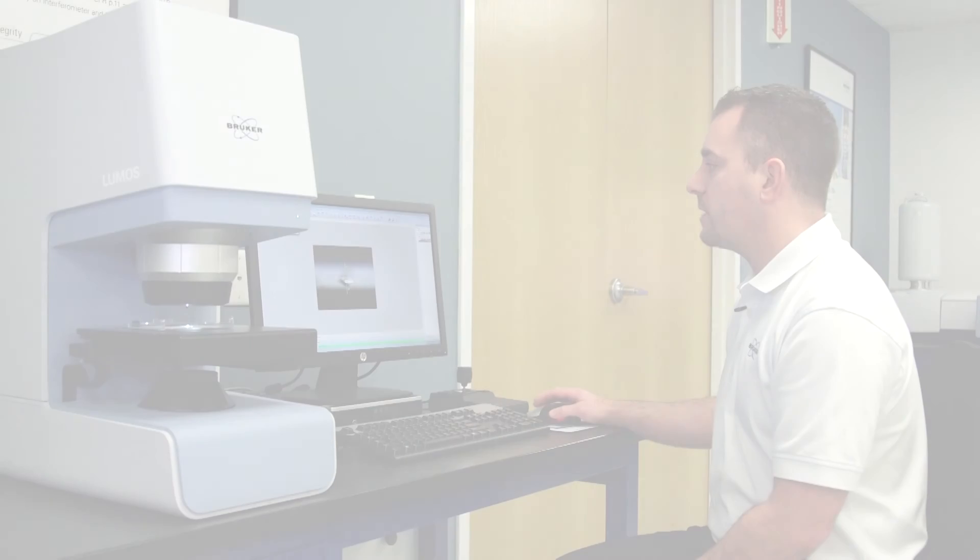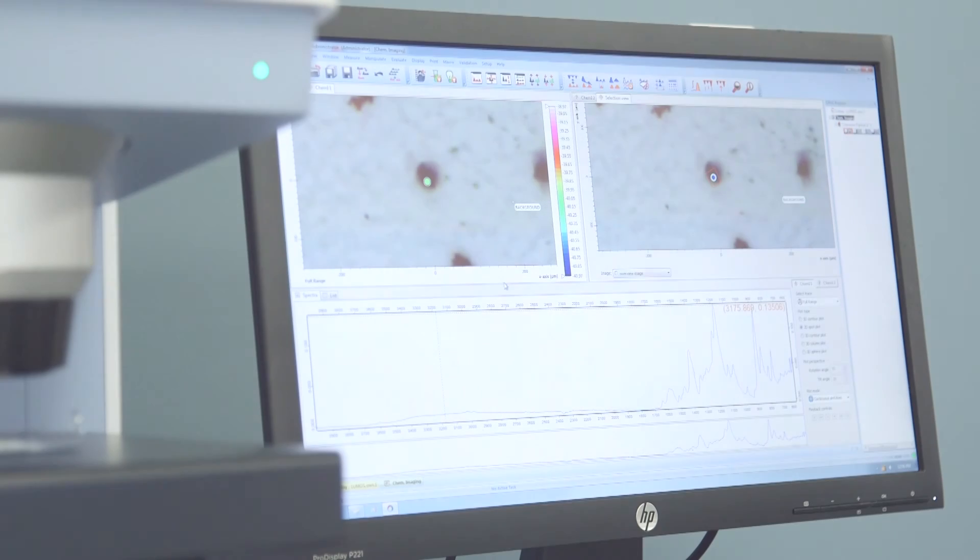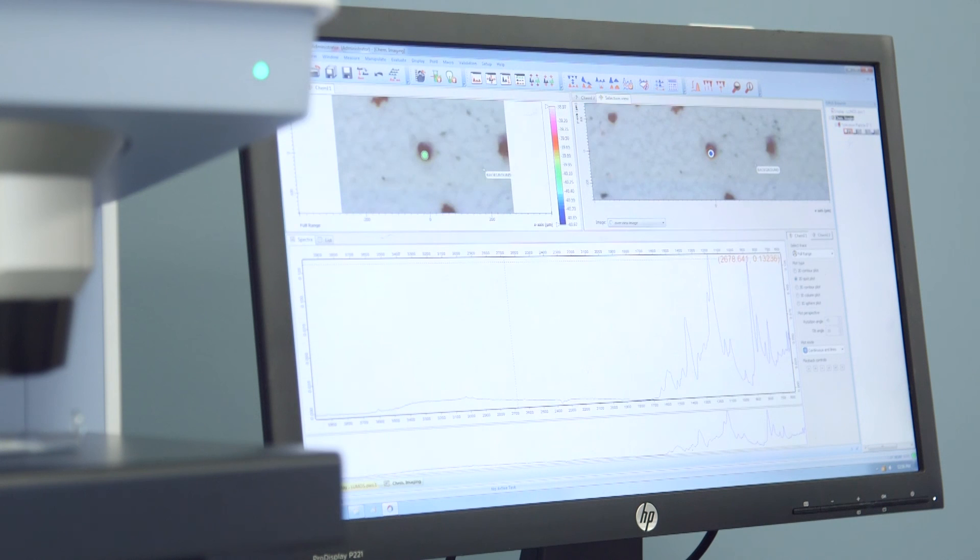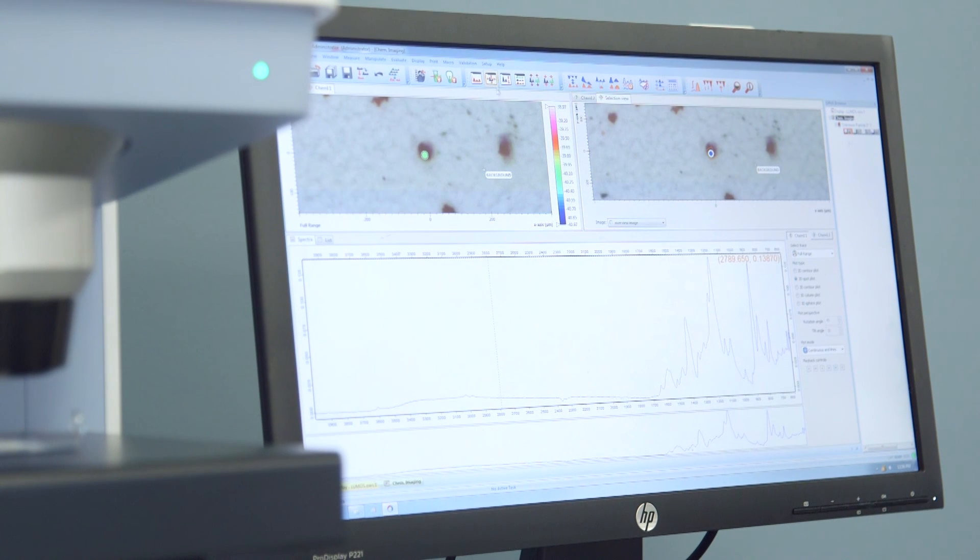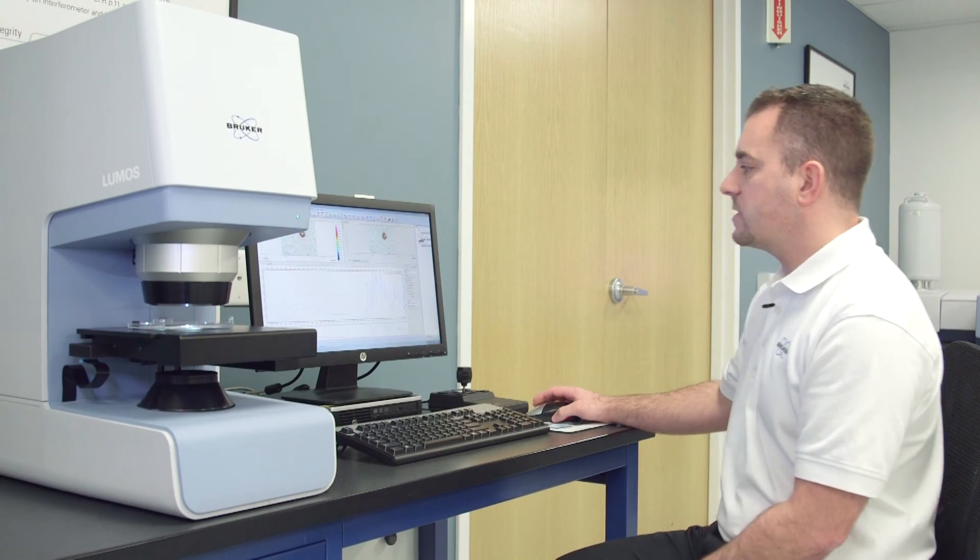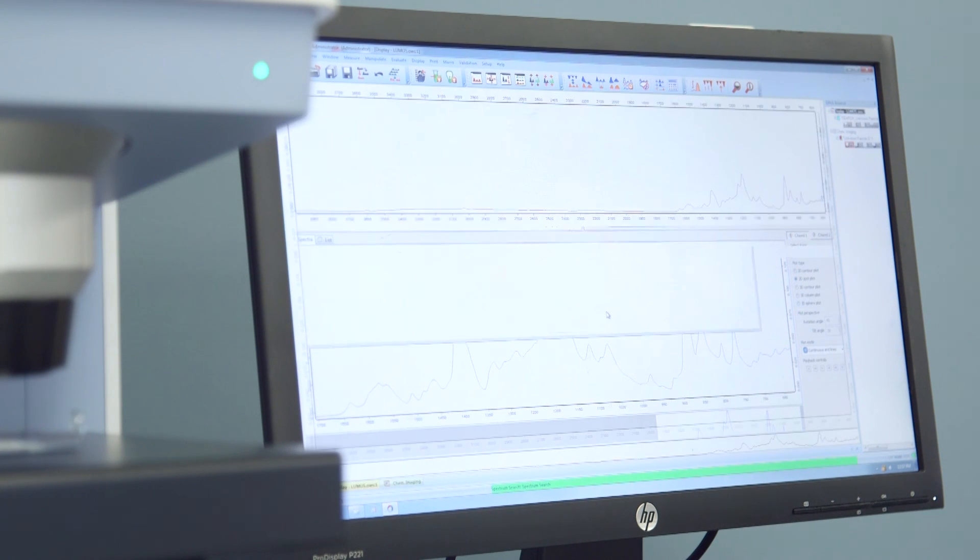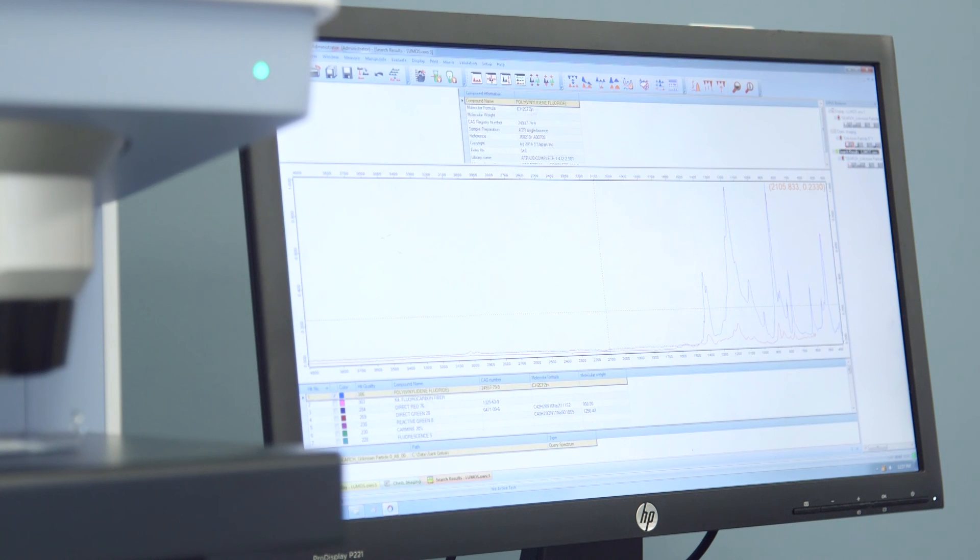So now the analysis is complete. Go ahead and see in our chemical imaging window our visual picture. So up here we can see our visual image along with our overview image. And then down here we see a nice high signal to noise spectra. Now from here I can right click and extract the spectra. I can search the spectra in a library. And I get a nice result.